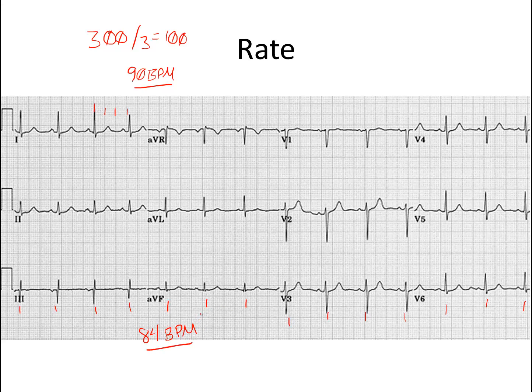If your patient has a low heart rate, they have bradycardia. If they have a high heart rate, then they have tachycardia. And obviously somewhere in the middle, they have a normal rate.